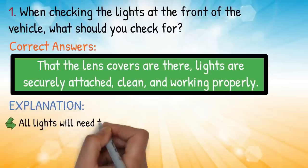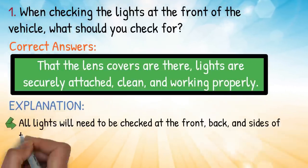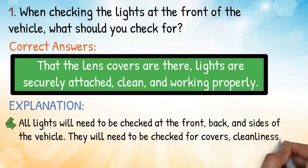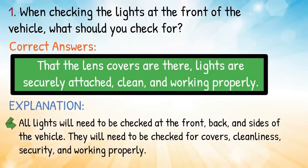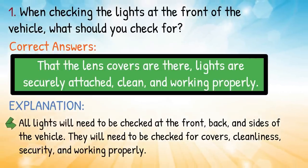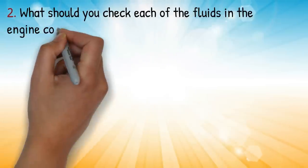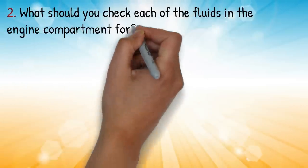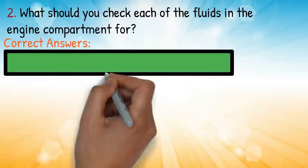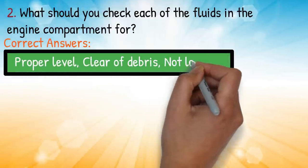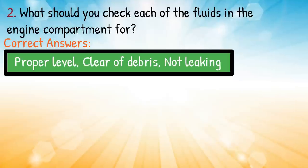Explanation: all lights will need to be checked at the front, back, and sides of the vehicle. They need to be checked for covers, cleanliness, security, and that they're working properly. Question two: what should you check each of the fluids in the engine compartment for? Correct answer: the proper levels, that they're clear of debris, and no leakage.